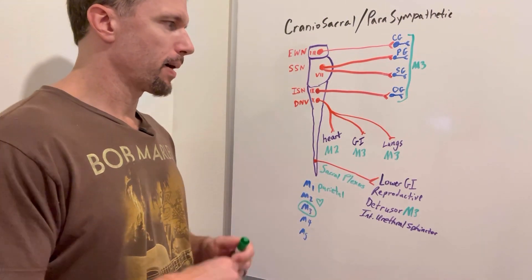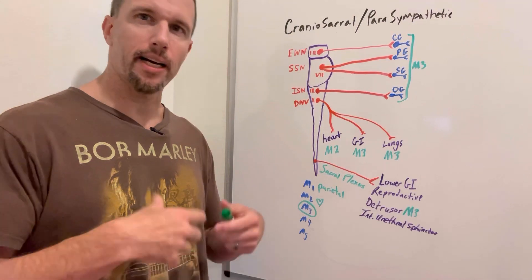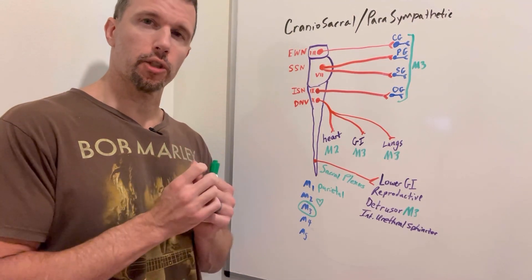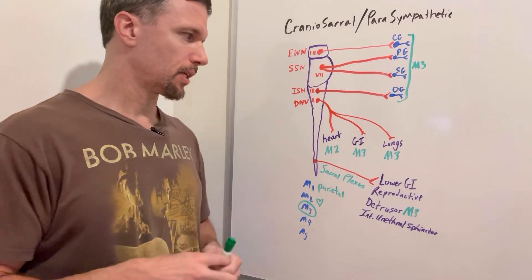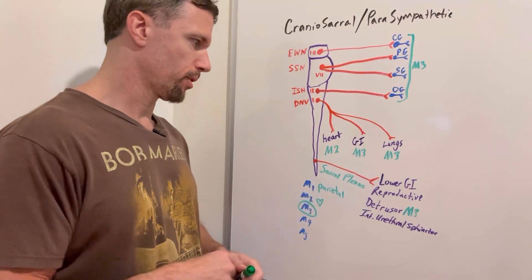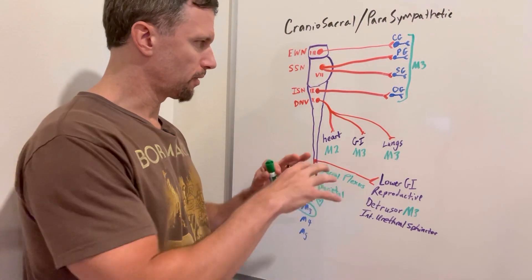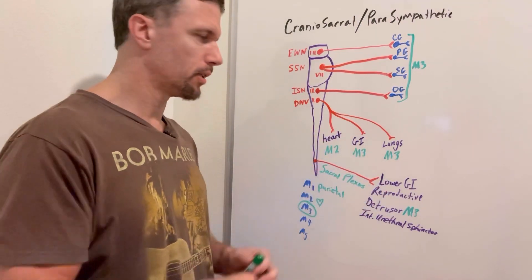At the lungs, the parasympathetic rest and digest, if we're resting and digesting, we don't need a whole lot of air coming in our lungs. So this tends to cause bronchoconstriction, the smooth muscle around the bronchioles can constrict. Those have M3 receptors. The vagus nerve covers a lot. I didn't go through everything, but those are the main ones.